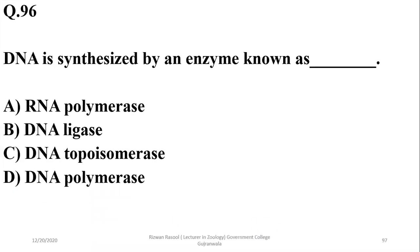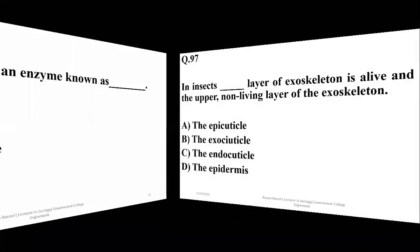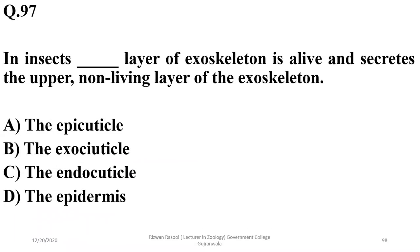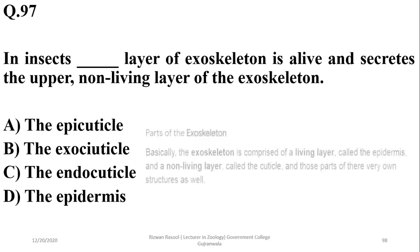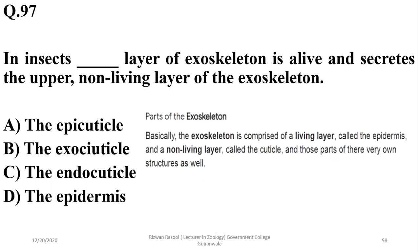Question 95: DNA is synthesized by an enzyme known as DNA polymerase. Question 96: The inner living layer of the insect exoskeleton is the epidermis — while the cuticle is the dead layer. So D is the right option.